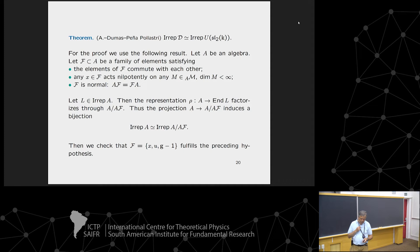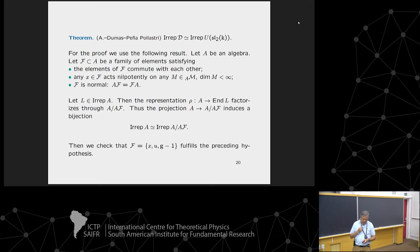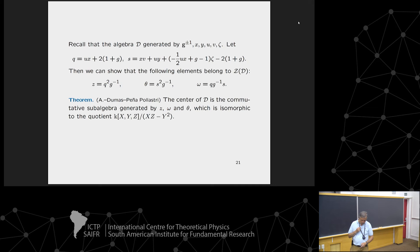The proof uses the following result. Suppose you have an algebra A with a family of elements F such that the elements commute with each other, each element of F acts nilpotently on any finite-dimensional A-module, and (A, F) is normal — the left ideal generated by F is two-sided. Then any representation of A factors through A divided by the left ideal generated by F, and the projection induces a bijection between irreps of A and irreps of A/AF.